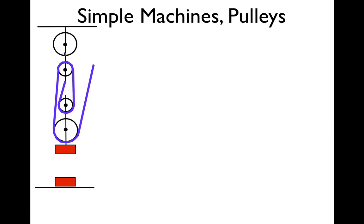Usually, when we have them grouped together, we think of this as like the top pulley, the two, and then this is the bottom pulley. This is the string we would pull, and this is the object. It starts here, and we're going to raise it up to here.